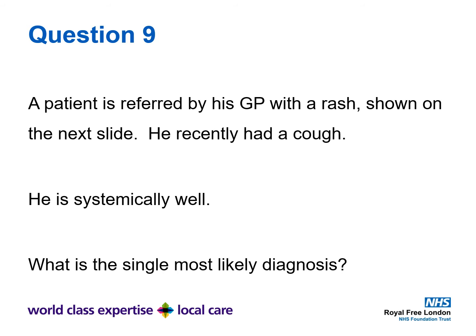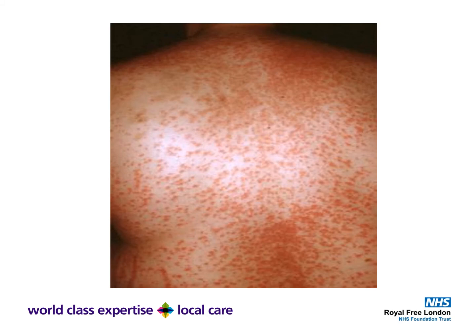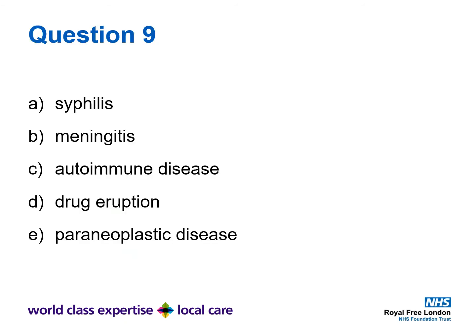Question 9. A patient is referred by his GP with a rash which is shown on the next slide. He recently had a cough. He is systemically well. What is the single most likely diagnosis? Pause the video and study the rash until you think you have a diagnosis. Is it A: syphilis, B: meningitis, C: autoimmune disease, D: a drug eruption, or E: a paraneoplastic disease?